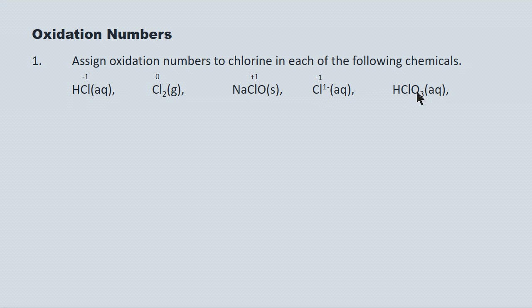Here's a more complex example. The oxygen rule is minus two, and there are three oxygens, so the total oxidation state of the oxygen is minus six. The hydrogen rule is plus one. So with minus six and plus one, the chlorine must be plus five, to balance the oxidation states to the charge in the particle, which is zero.